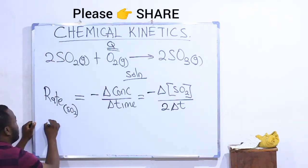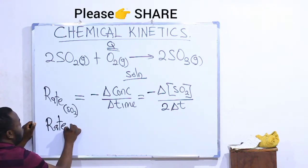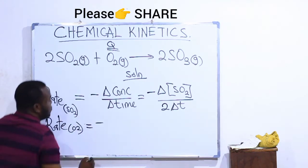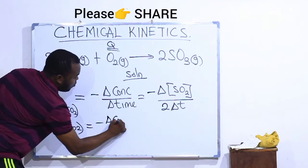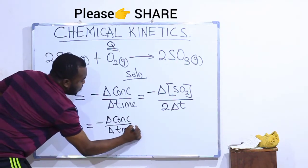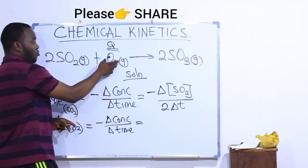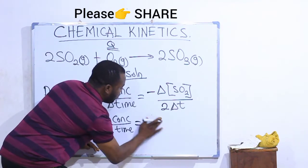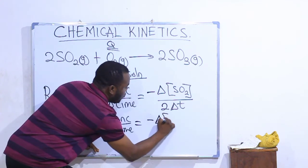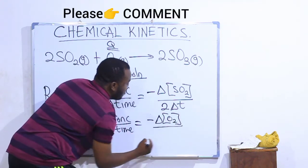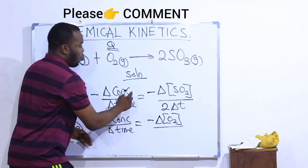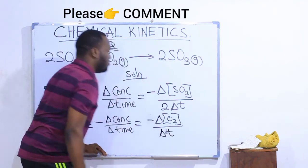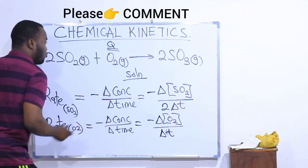Now with respect to oxygen: the rate with respect to O2 — oxygen is on the reactant side, so it will also carry a negative sign. It will be: negative change in concentration of O2 divided by the change in time. The coefficient of oxygen here is 1, so 1 times the change in time is still just the change in time. This is the expression with respect to oxygen.